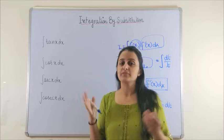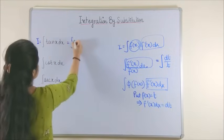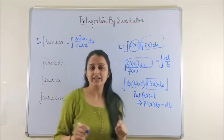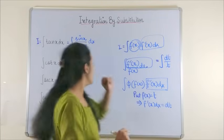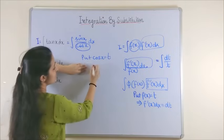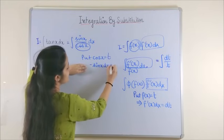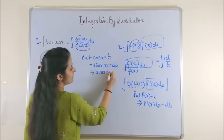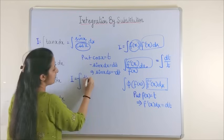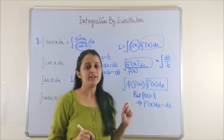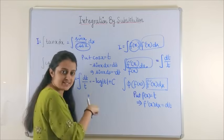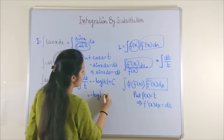Taking the integral of tan x, we write it as the integral of sin x / cos x dx. Looking at the substitution forms and identifying function and derivative: if we put cos x = t, then the derivative of cos x gives minus sin x dx = dt, which means sin x dx = minus dt. The integral changes to minus dt/t.